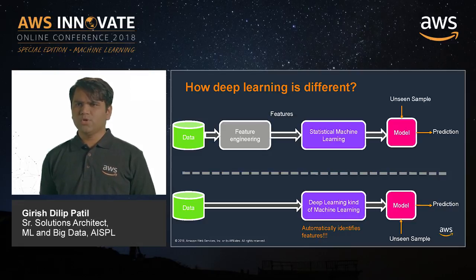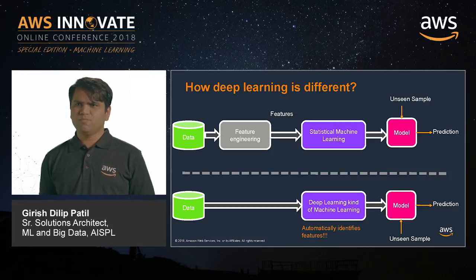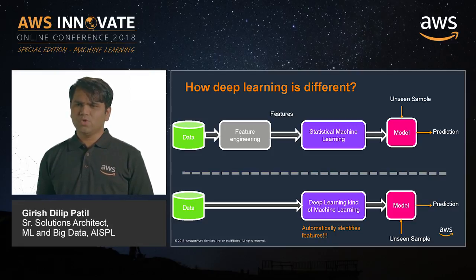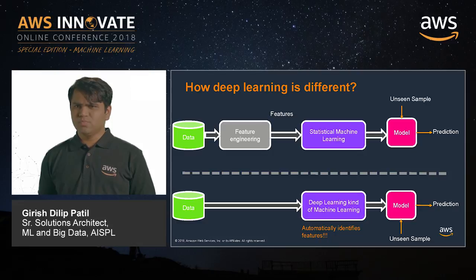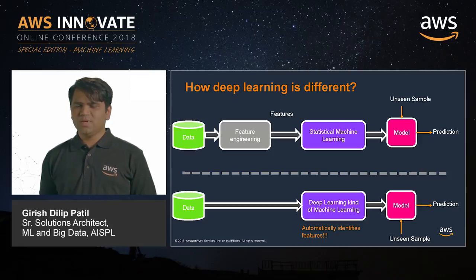In deep learning, all you do is feed the data to the algorithm — you don't help with feature engineering. When training it to tell dogs from cats, you don't take measurements of tails or colors. The algorithm builds a model that automatically learns the right features to distinguish dogs from cats. In many applications where you don't know what the important features are, deep learning comes in very handy.